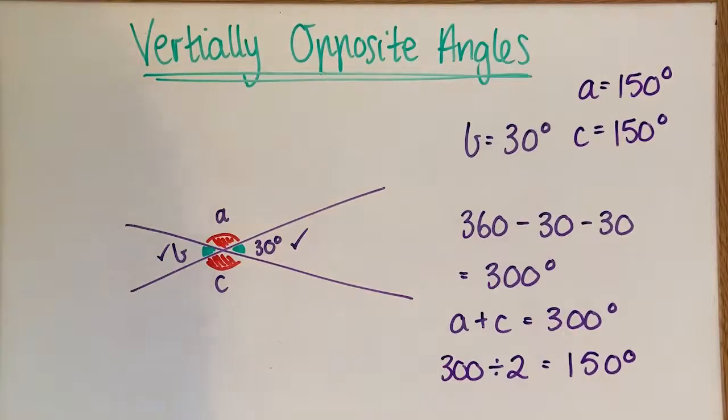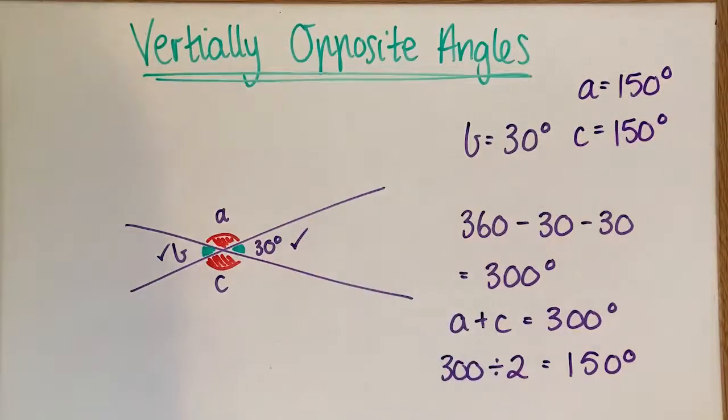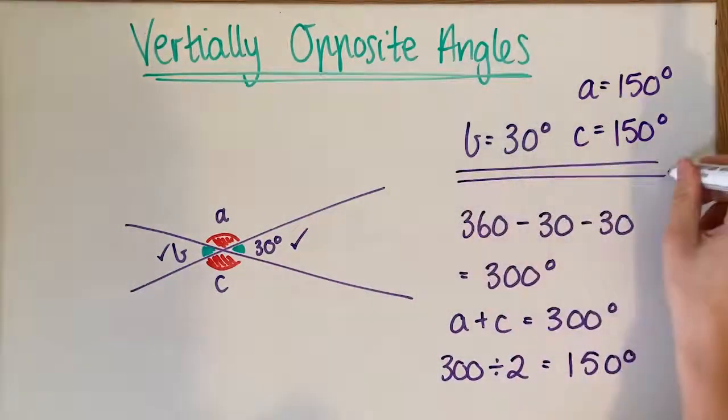And a way to check would be to go this plus this plus this plus the original 30. If that adds up to 360, I know I've done it correctly, which it does.